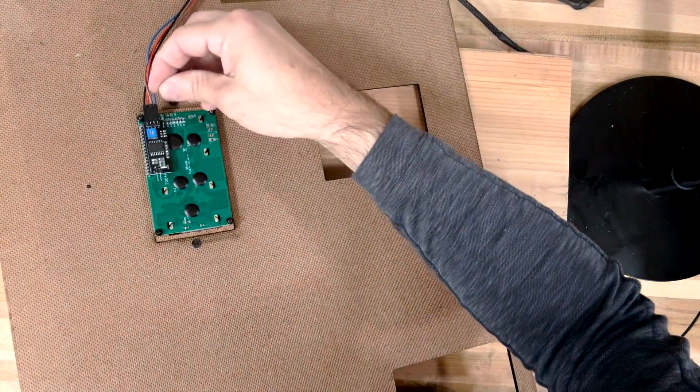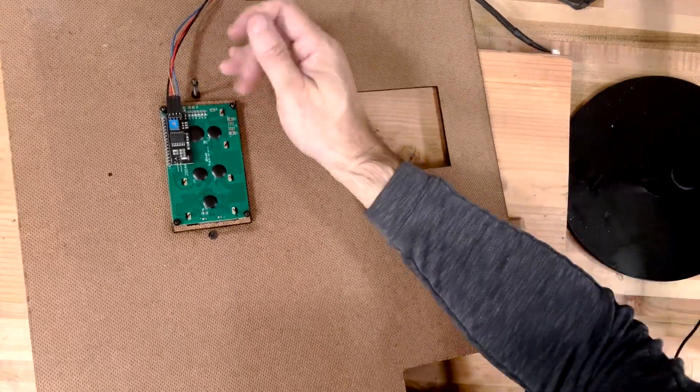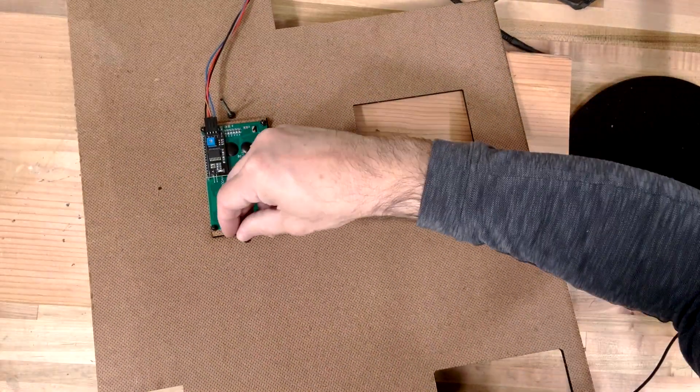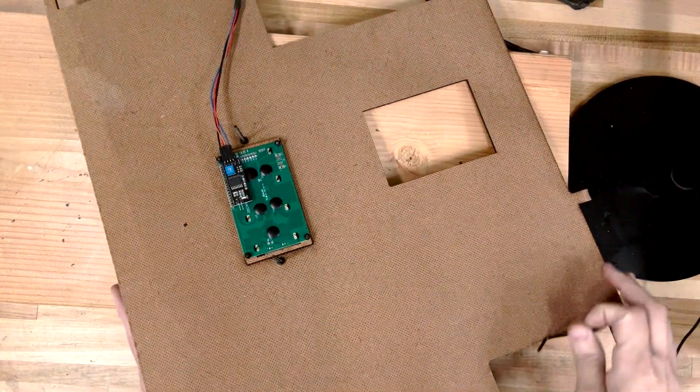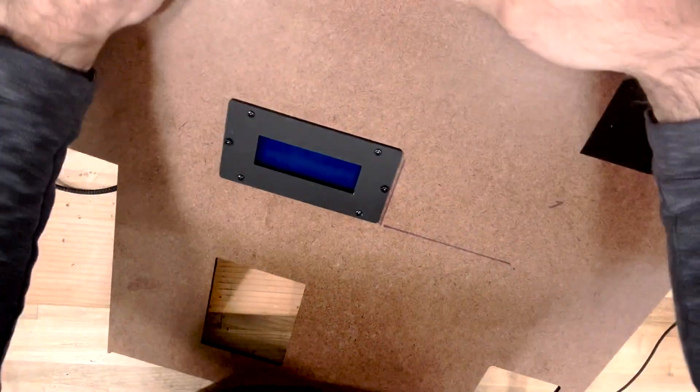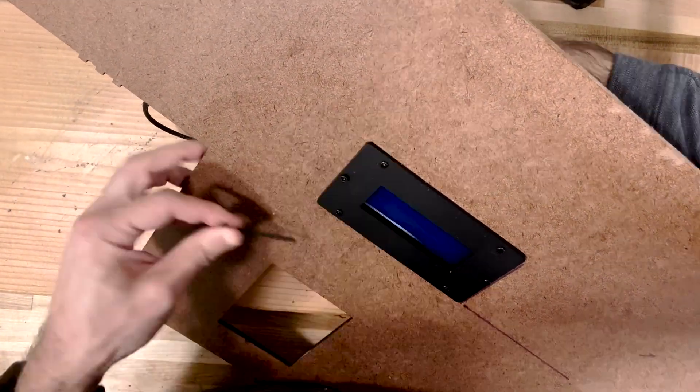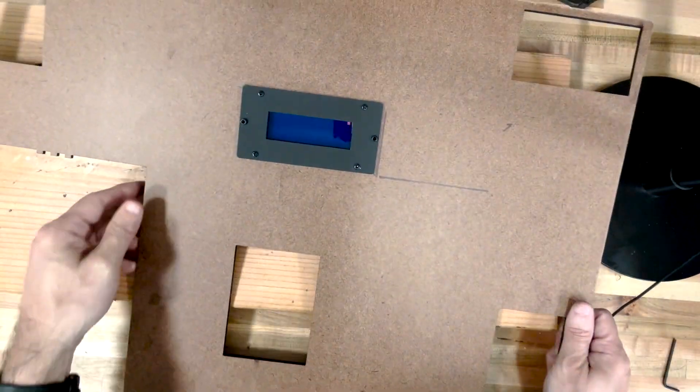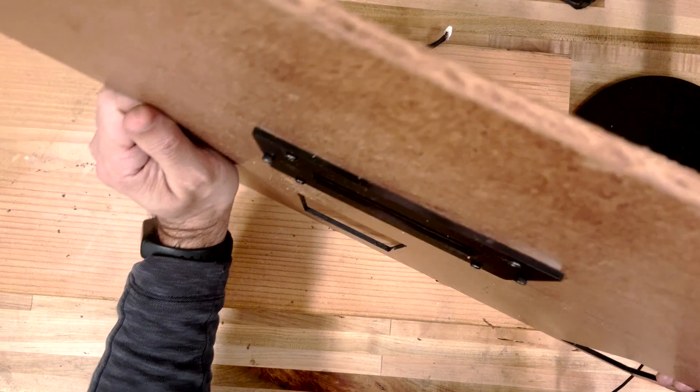And then just take these and just thread them in. We also ship with this little hex key tool, so you can always go on the other side and just use this to tighten it up. All right, that's it. So now you've got a nice clean flush mount install.